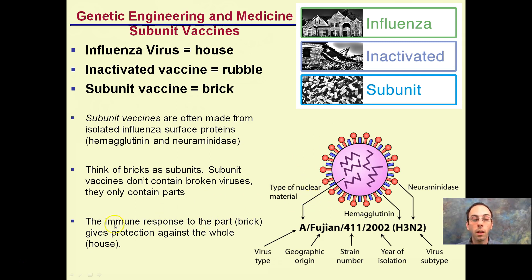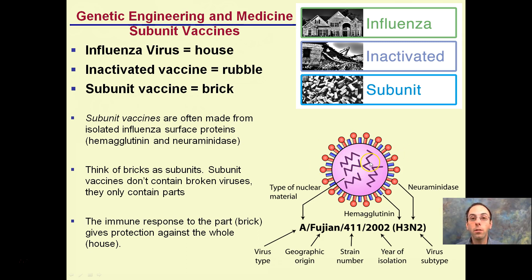These surface proteins are the bricks. They give protection against the whole house — meaning once the co-proteins are recognized, the body's immune system can attack that virus early on. The advantage of just having the co-proteins is that there's no actual DNA or RNA virus present, so there's no way the body can actually get sick, while still building up the body's immune system.